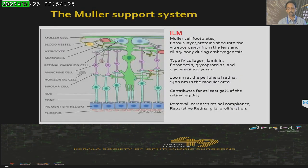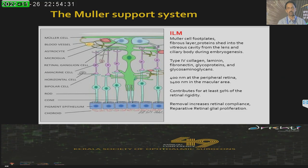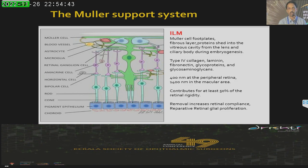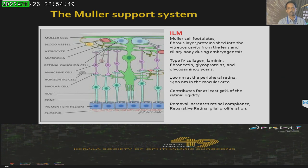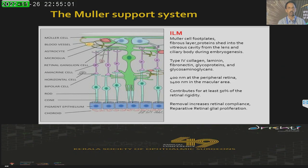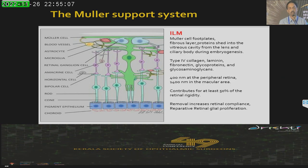The Müller cells — the central structure that spans across the retina — give 50% of the retina its rigidity. That is an important thing to remember. The ILM which we peel is the foot plate of the Müller cells — like chopping off the legs. What happens is the whole retina gets a little unstable, and this increased retinal compliance helps us to close the holes. Studies have shown that there is a reparative retinal glial proliferation that occurs after ILM peeling, and all these factors help in closing the macular holes.